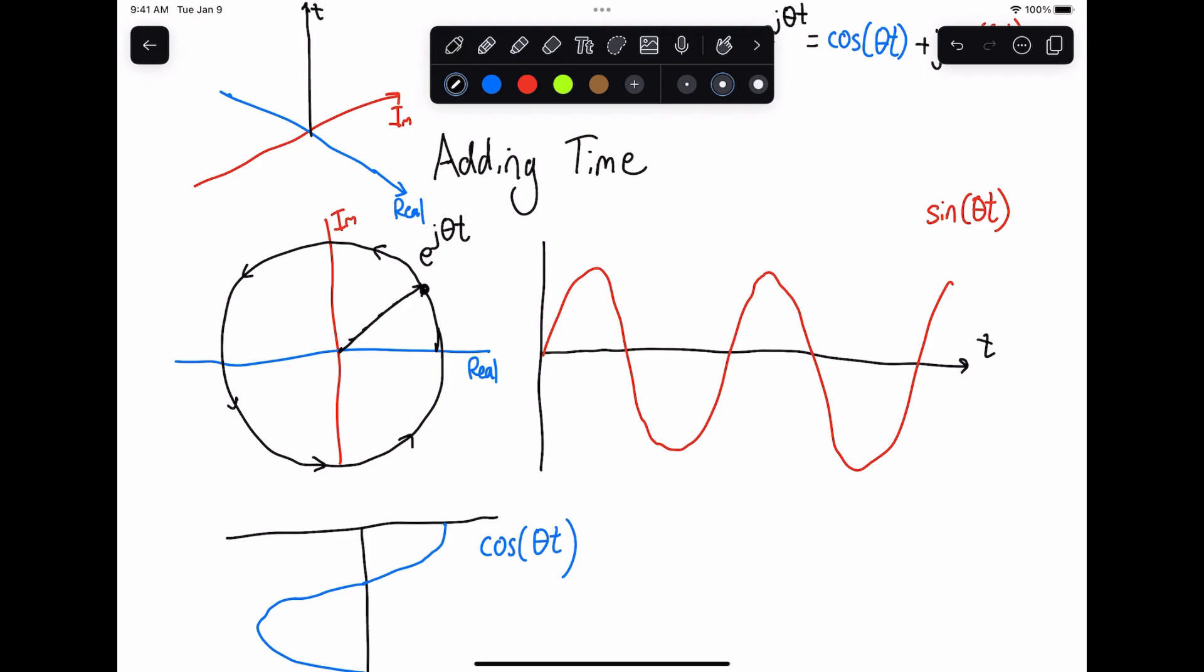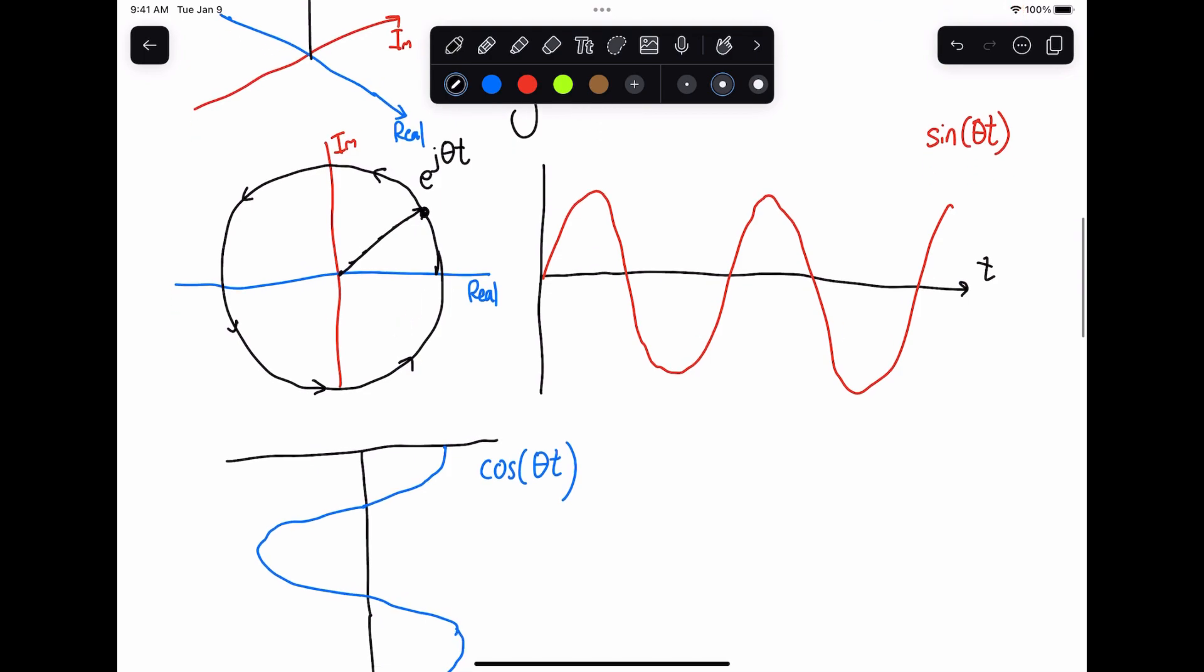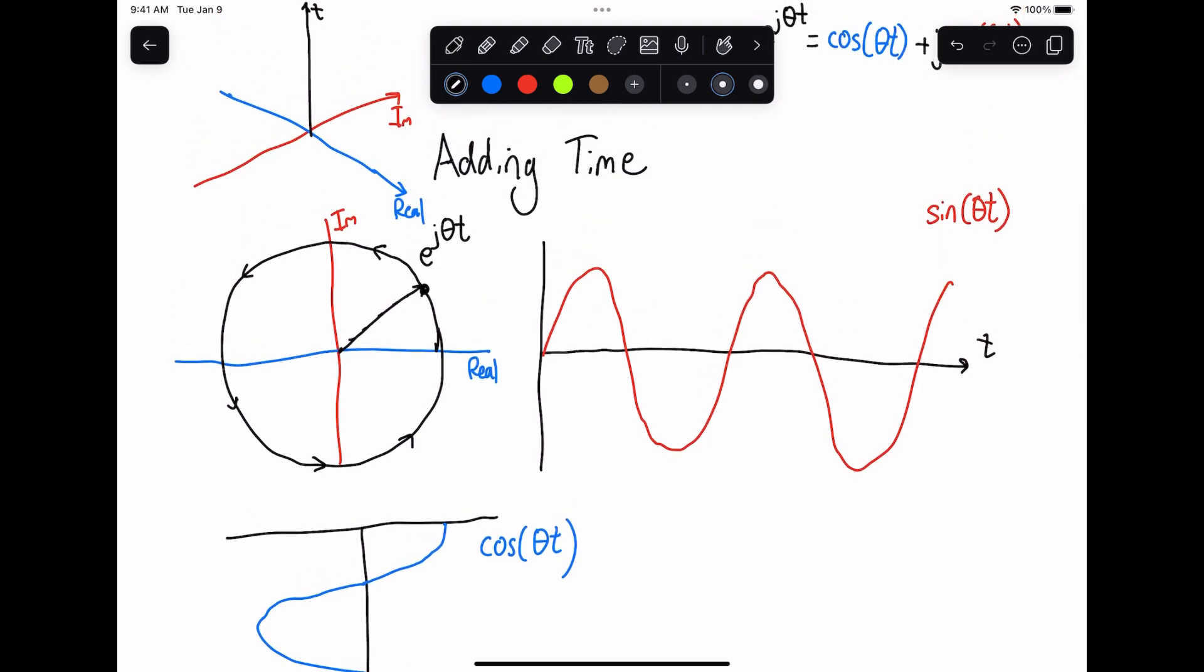Now, the real part of this value is basically if you were to take a flashlight. So imagine I have like a little flashlight here, and you were to take it from above this and shine a light down. It's going to be basically the projection of this point onto the real axis. So when you project it from the top,